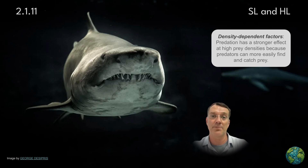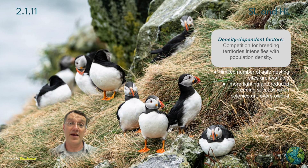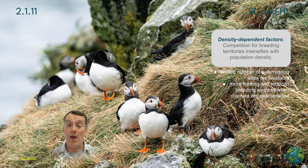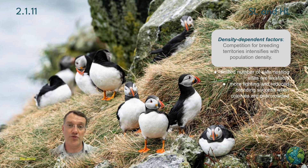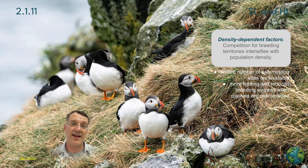As seen in these pictures of Atlantic puffins in Scotland, competition for breeding territories can intensify in crowded conditions — there's only so much space where you can make a nest and lay eggs. As population density increases, there's greater competition for those nesting sites. When it becomes too stressful, there's more fighting, nesting sites and eggs may be destroyed, and that has a negative impact on population size.